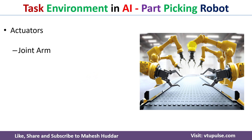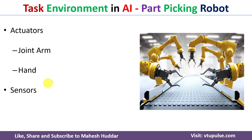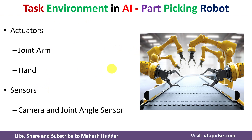The third component is Actuators. There is a joint arm with a hand attached to it. Whenever a part comes below the actuator, it picks that part and places it into the appropriate bin. That is the role of actuators in this task environment.